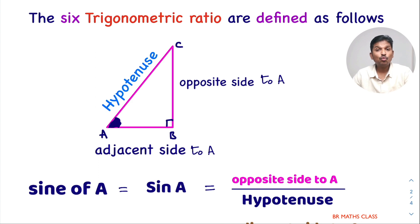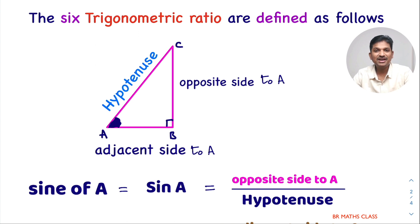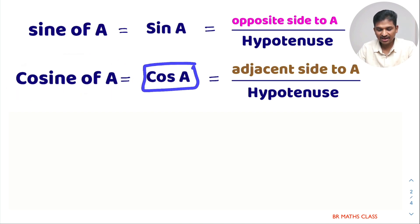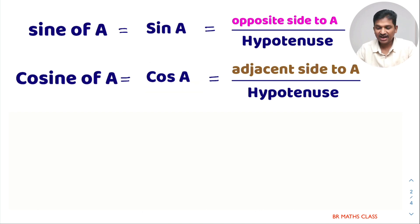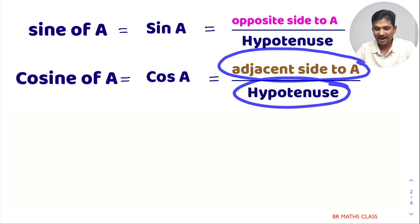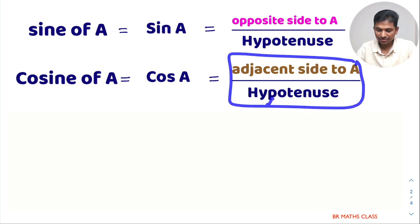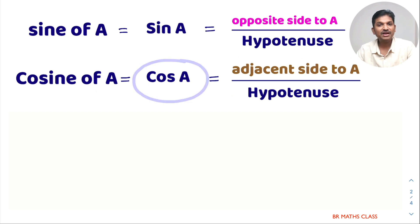You need to memorize these ratios because throughout this chapter we are going to use these trigonometric ratios. If someone asks you to define sin A, you need to say sin A is opposite side divided by hypotenuse. The second trigonometric function is cosine of A, simply called cos A — taking the first three letters of cosine. Cos A is defined as adjacent side to A divided by hypotenuse.